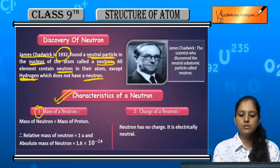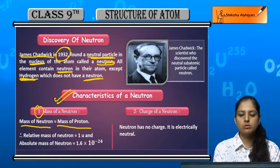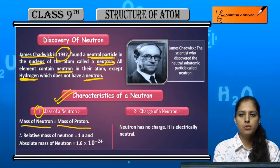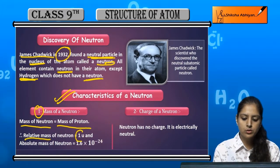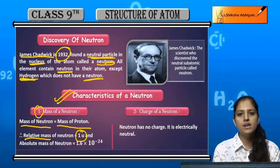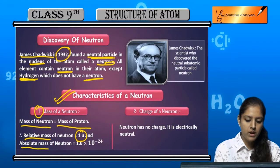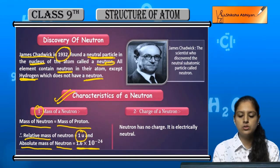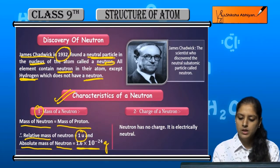The mass of a neutron is equal to the mass of a proton. The mass of a proton is equal to the mass of hydrogen, and the mass of a neutron is equal to the mass of a proton. The relative mass of a neutron is 1.6 multiplied by 10 raised to the power minus 24 grams.